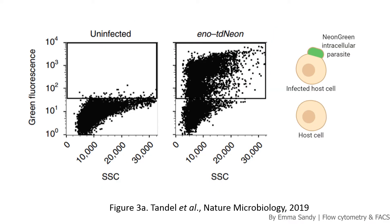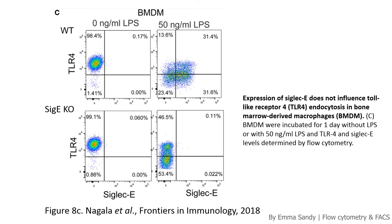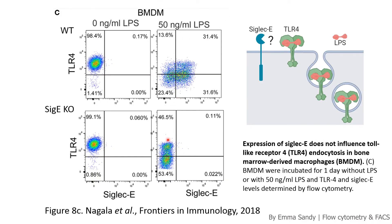This is another type of plot — a dot plot. The colours have changed slightly but it's the same premise: the parasites fluoresce green, and compared with an uninfected sample you can draw a gate around your infected cells. Moving on to a pseudo-colour plot: panels like these are common in immunology papers. This data is looking at macrophages, wild type or knockout for an immune modulatory receptor called Siglec-E. You can see on the left that the cells are untreated, then treated with LPS and this population shifts down, showing that TLR4 is being internalised or endocytosed. Interestingly, the knockout cells do not show Siglec-E expression but they do still endocytose TLR4.